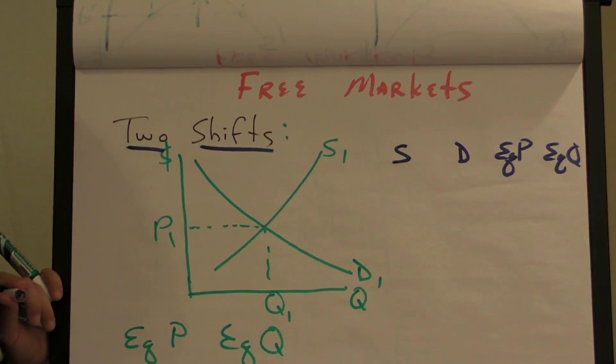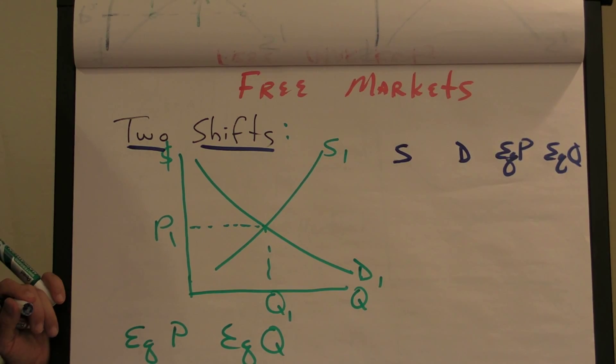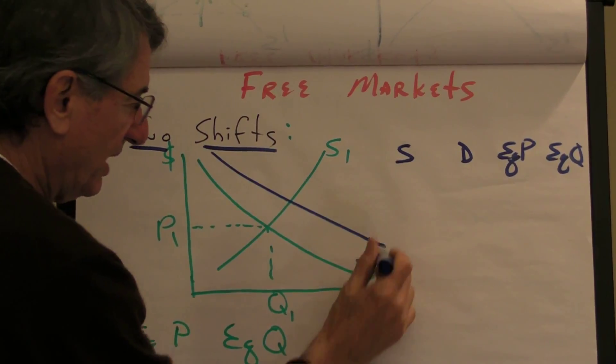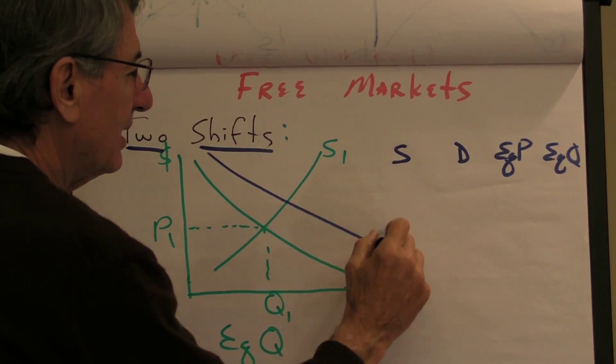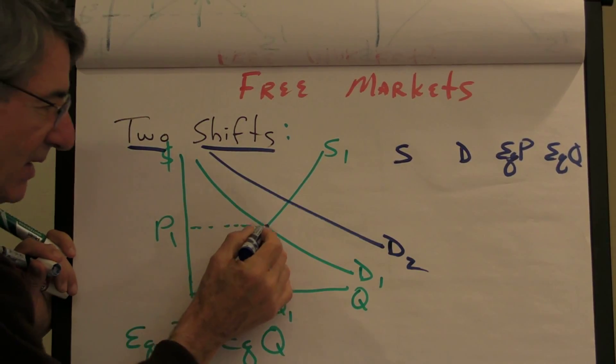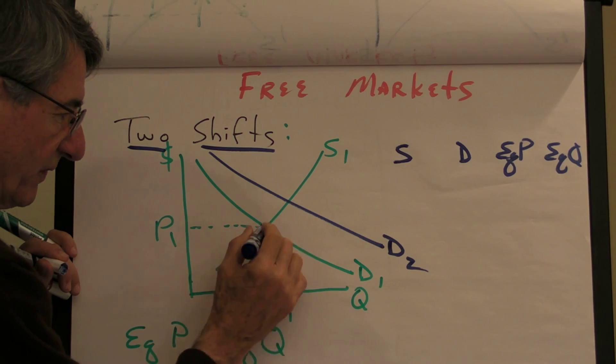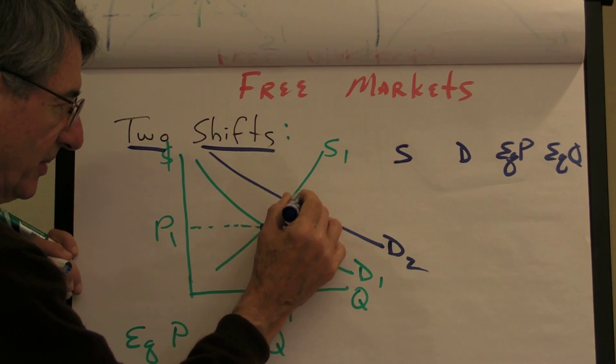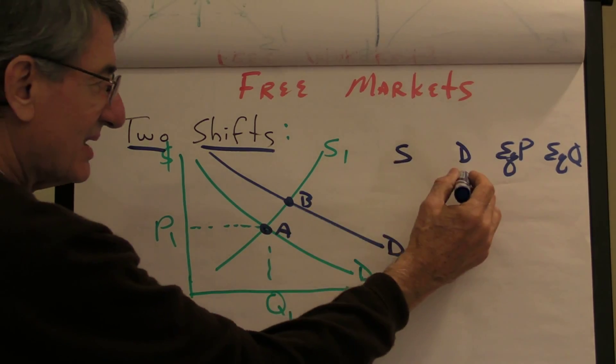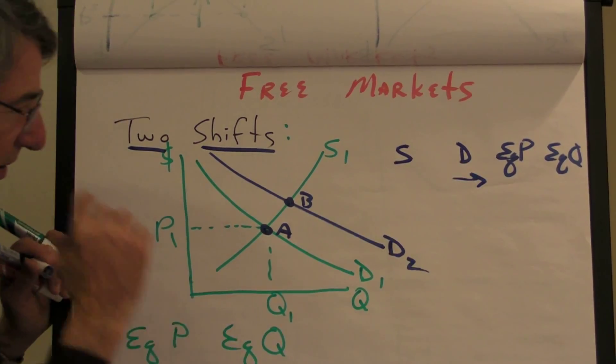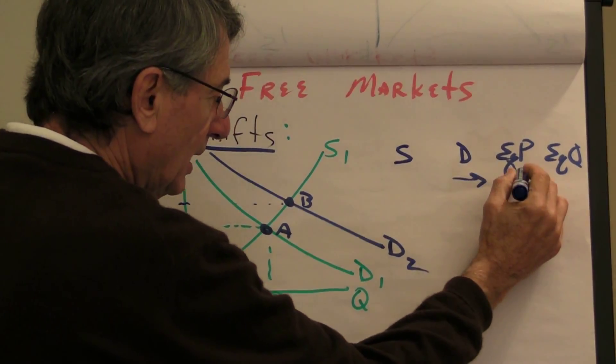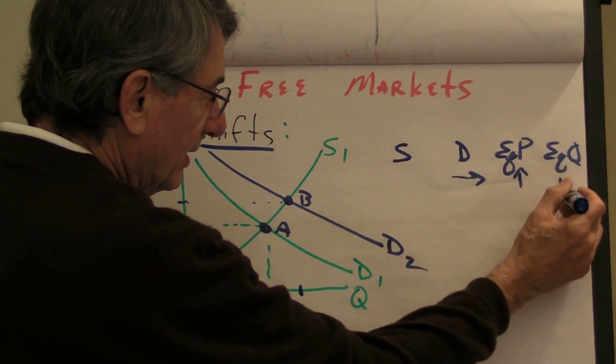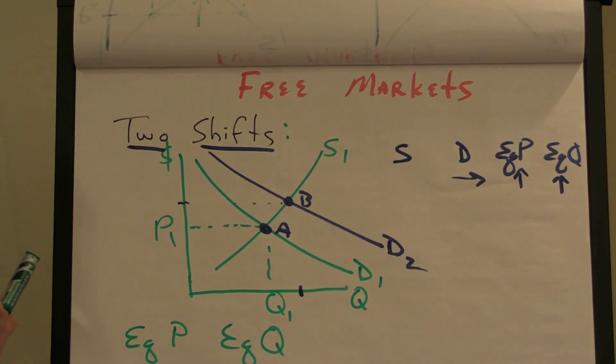So, let's say, do you want demand to increase or decrease? Pick. Increase. Great. So, demand increases because there's a favorable change in taste and preferences. Or the price of a substitute goes up. It could be anything. So, here's D2. It's the new demand curve. Now, this by itself would cause us to move from this equilibrium that I'm going to call A to this equilibrium that I'm going to call B. So, this shift right in the demand curve would cause the price to increase and the equilibrium quantity to increase as well.